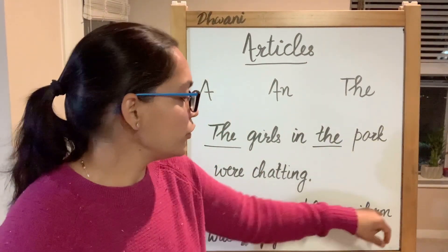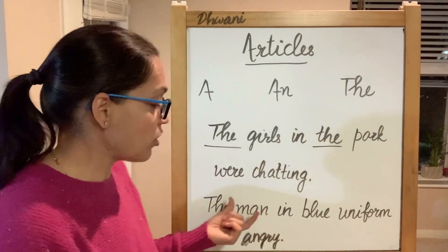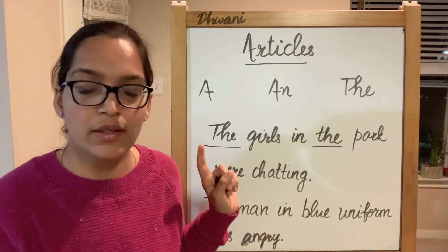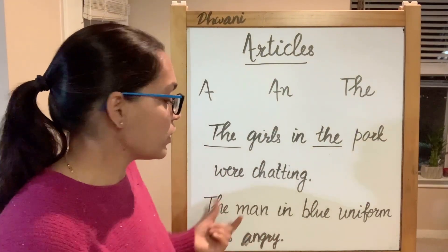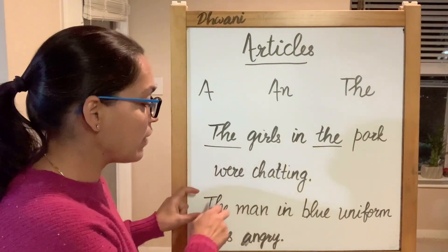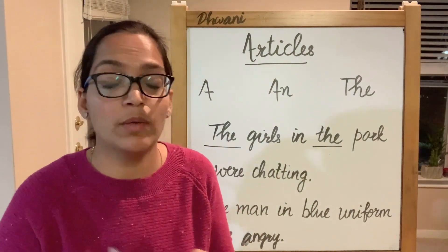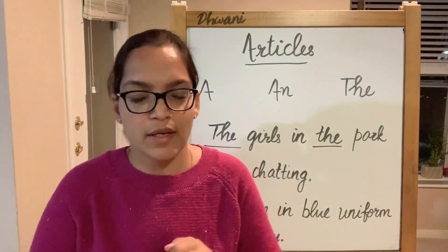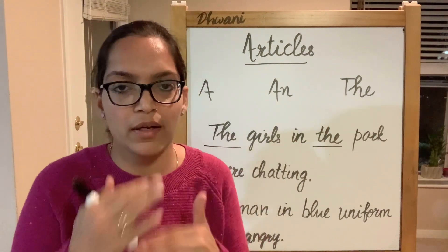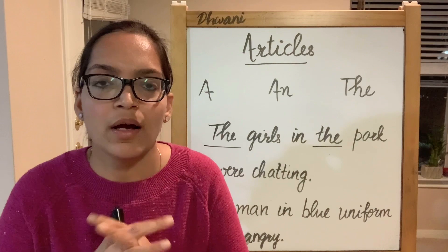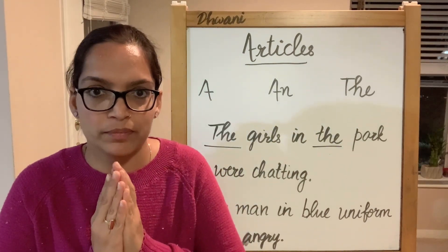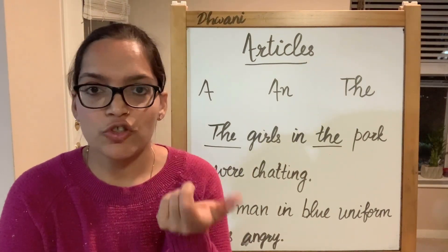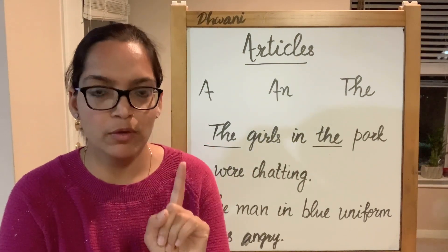Another example: 'The man in the blue uniform was angry.' We are talking about a particular man — not just any man. Whenever we want to show that a noun is a definite one, that we're talking about a particular person, we use the. Now let's take an example of something being mentioned again. If I say 'I am reading a book,' I'm showing this book is one single book, not talking about a particular book specifically.